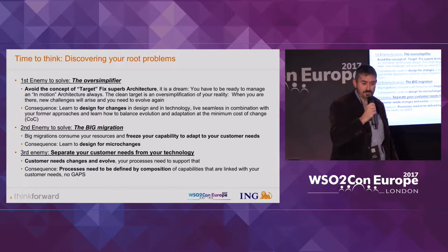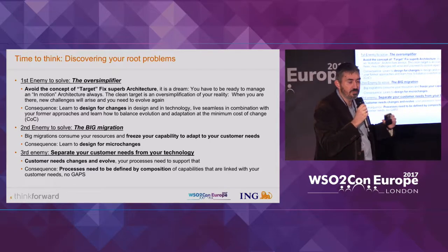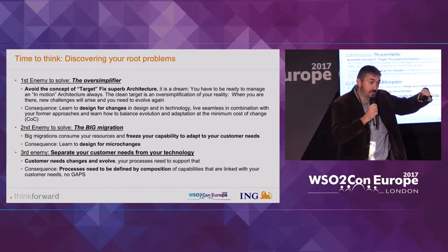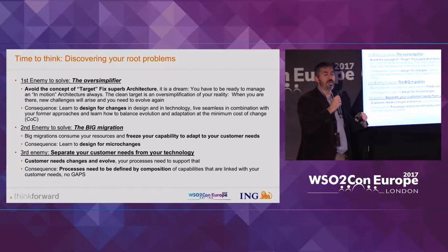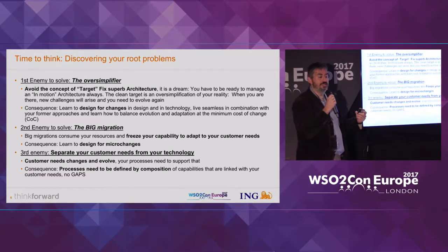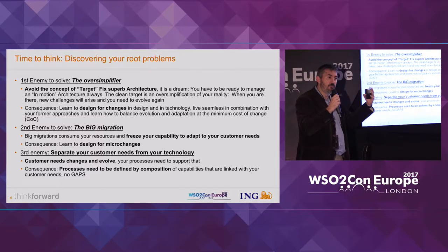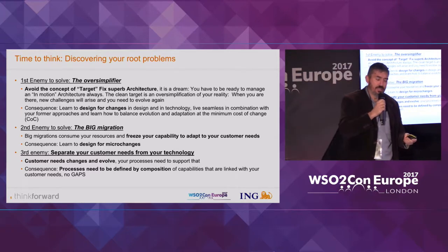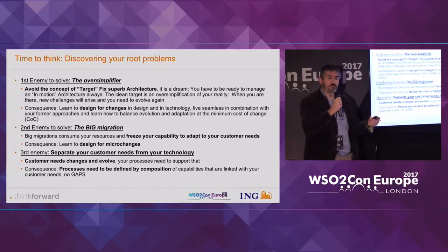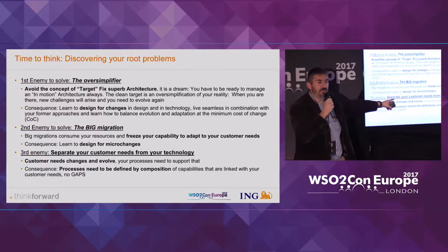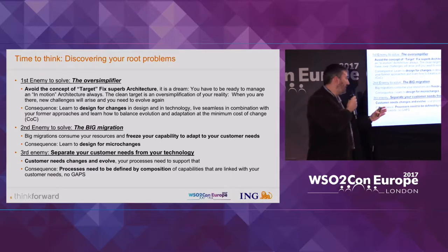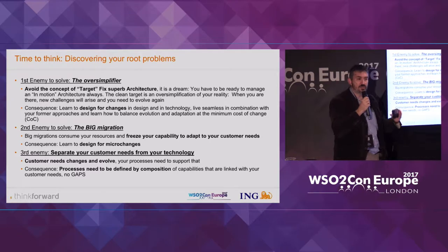One thing that is not real is the fixed target architecture. You won't see that in any situation. Most probably when you reach that super target architecture you need to evolve, or you have a change in your regulation. That's the reason the mid-long school talks about business modularity, because modularity is a need to evolve your architecture and your business. The real goal is to be prepared for change and design for change in your architecture. Avoid big migration — big bang is not good for customers, not good for your investment, and not good for your organization.